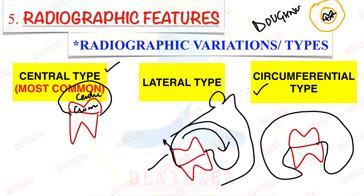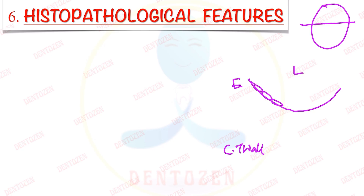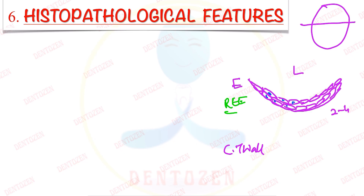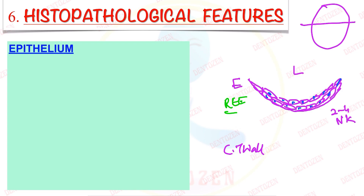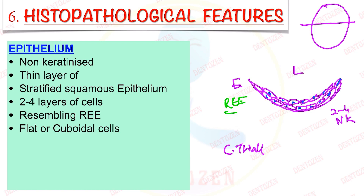Histopathology: the epithelial lining consists of 2–4 layers of flat or cuboidal cells resembling reduced enamel epithelium. It is a thin, non-keratinized stratified squamous epithelium with no rete ridges.